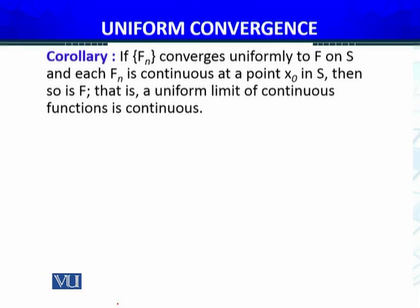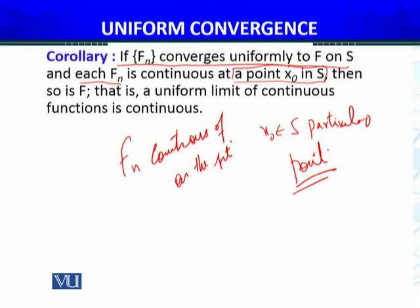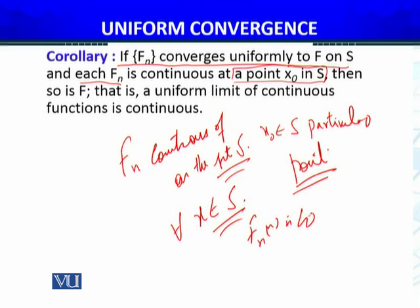The first result is: if FN converges uniformly to F on the set S, and each function FN is continuous at a point X₀ in S — here X₀ belongs to S is not a particular fixed point, it is an arbitrary point — it means FN is continuous on the set S. For all X belonging to S, FN is continuous. Then so is the limit F, meaning F will be a continuous function. That is, a uniform limit of continuous functions is continuous on the set S.